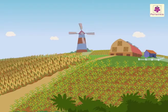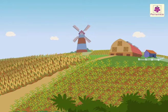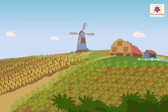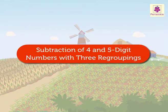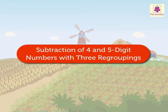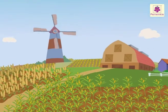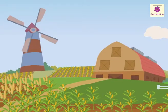Friends, we are at the granary near the farm. Today, let us learn subtraction of 4 and 5 digit numbers with 3 regroupings.